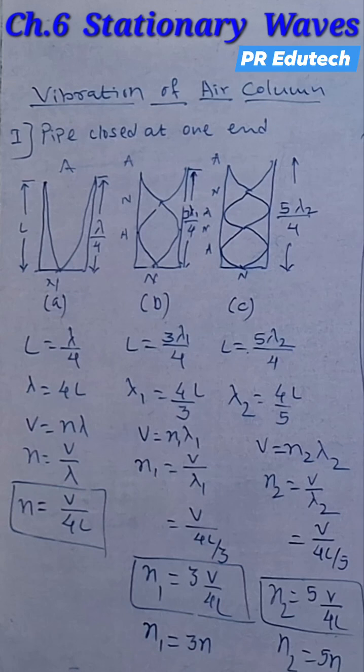Therefore n is equal to V by lambda. So in the first case frequency will become V by 4L. In the second case frequency will become V divided by 4L by 3. That is n1 is equal to 3 times V by 4L.